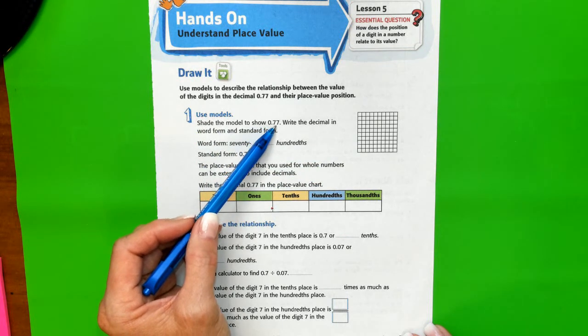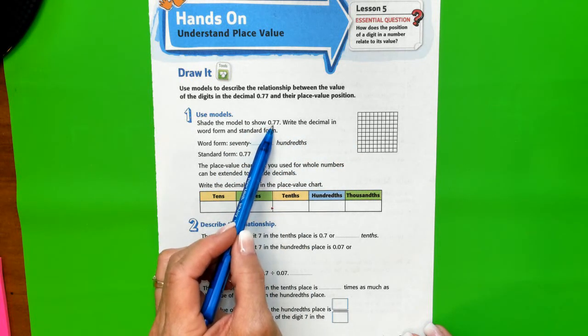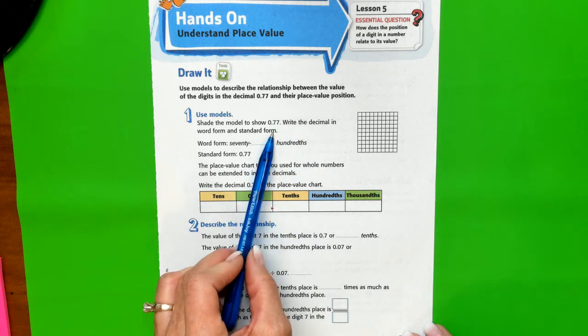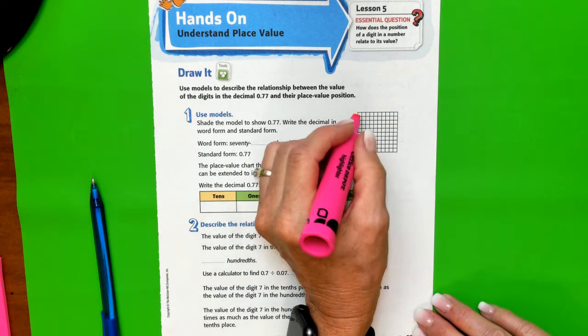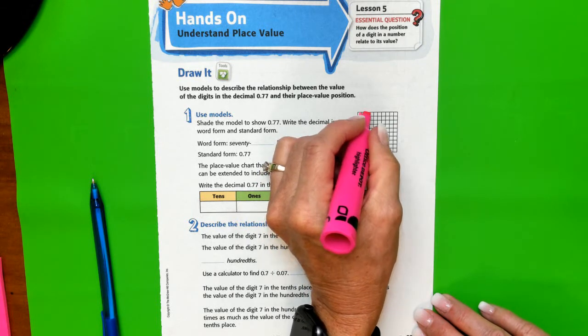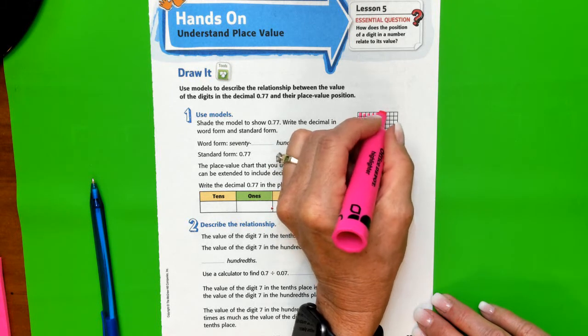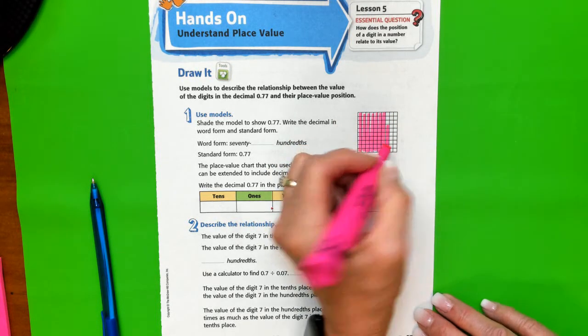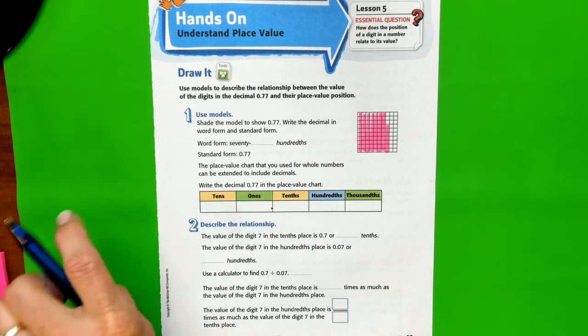Shade the model to show 0.77, so 77 out of a hundred, because we're two place values behind the decimal. Write the decimal in word form and standard form. Let's shade - we're shading 77 out of a hundred: 10, 20, 30, 40, 50, 60, 70, and then all but three for the last one. There we go, 77 out of the hundred.